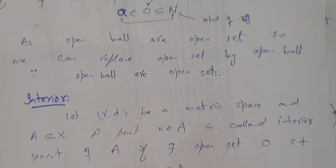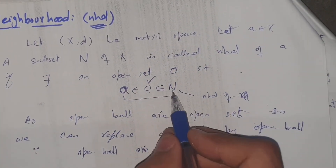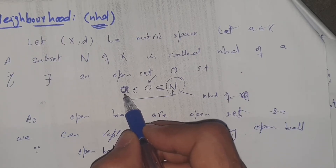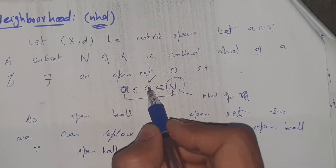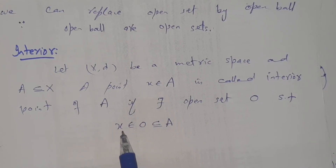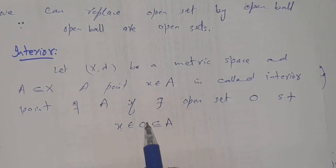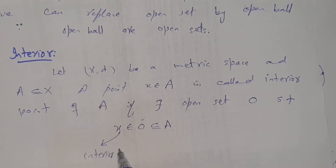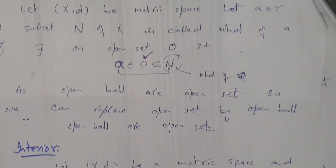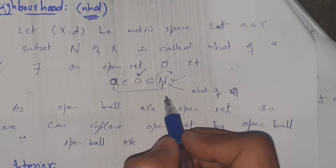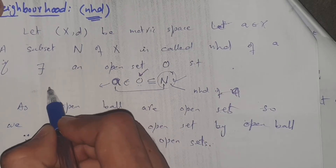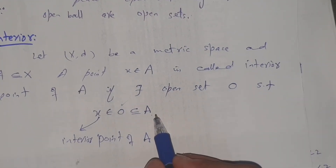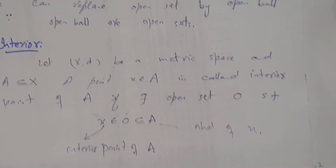This definition is similar to the definition of neighborhood. In the neighborhood definition, the set N is called a neighborhood of a, where a is an element, and there exists an open set O between the element and the set. In the interior point definition, there also exists an open set O between the element and the set A, but in this case the element is called an interior point of A, and the set is called the neighborhood of X.